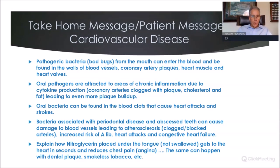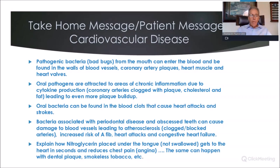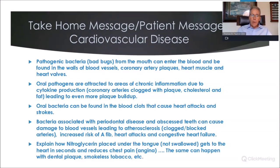Oral bacteria can be found in blood clots that cause heart attacks and strokes. We don't know exactly what that means, but we'd rather not have those bacteria there. Bacteria associated with periodontal disease and abscessed teeth can cause damage to blood vessels, leading to atherosclerosis, increased risk of AFib, heart attacks, and congestive heart failure. I always explain to patients about nitroglycerin: when someone has chest pain, they don't swallow a pill — they put a nitroglycerin tablet under their tongue, and within a minute or two the chest pain is gone.